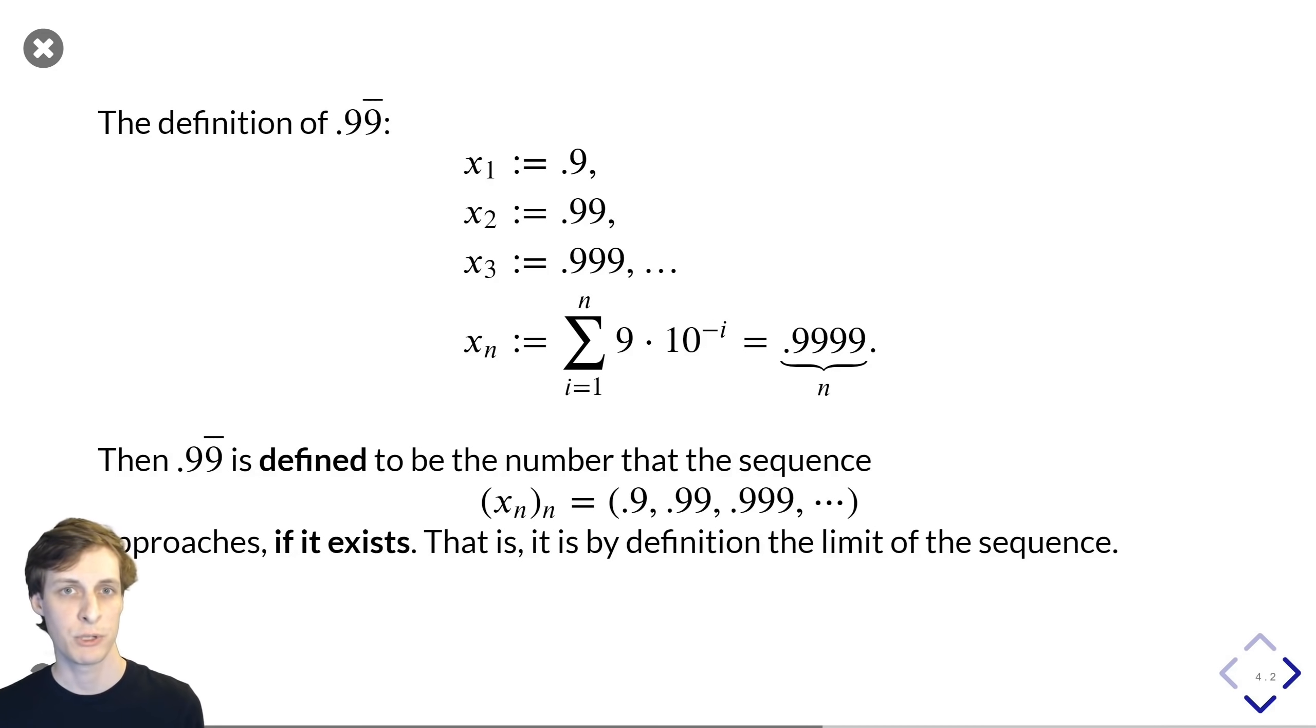You can write it for an arbitrary n using this capital sigma fancy math notation, but that's not really necessary. Remember that for a fixed value of n, this is just a finite decimal approximation. It has n digits after the decimal point, and it stops.